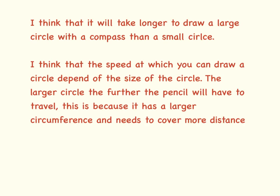Here's another one. I think it will take longer to draw a large circle with a compass than a small circle. That is a really basic, really short hypothesis. If you want the full marks you have to develop it. I think the speed at which you can draw a circle depends on the size of the circle. Our independent variable — the bit that we are changing — is the size of the circle. Our dependent variable — the bit that we are measuring — is the speed at which you can draw.